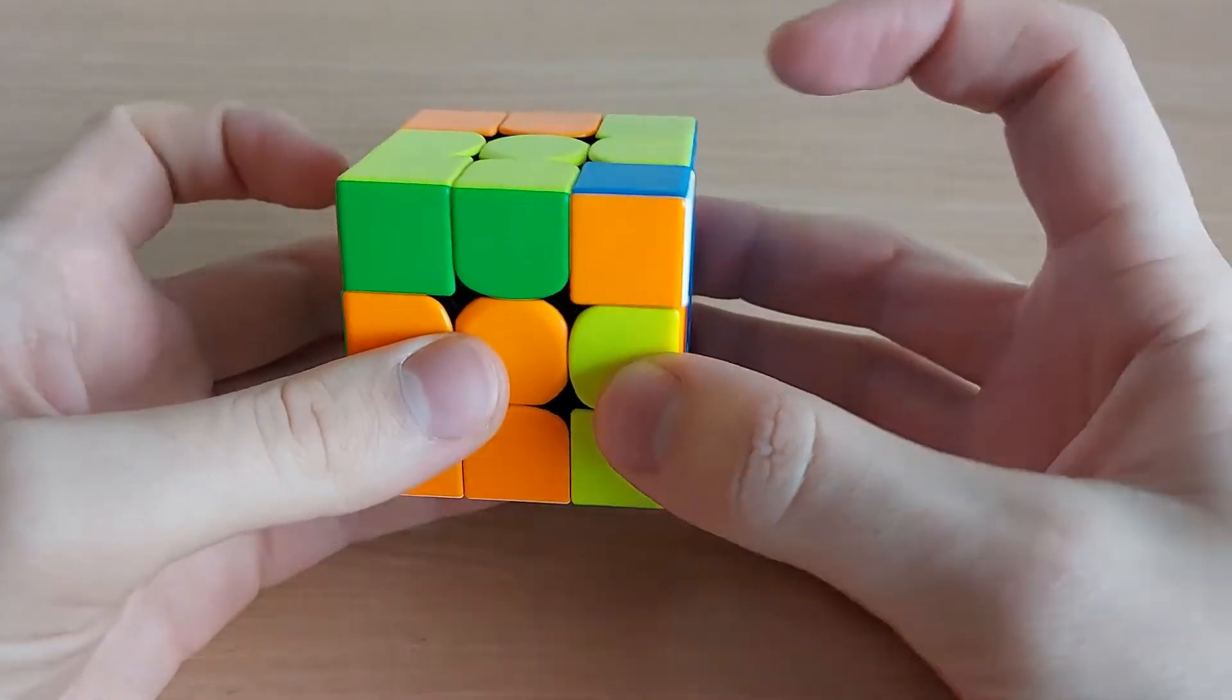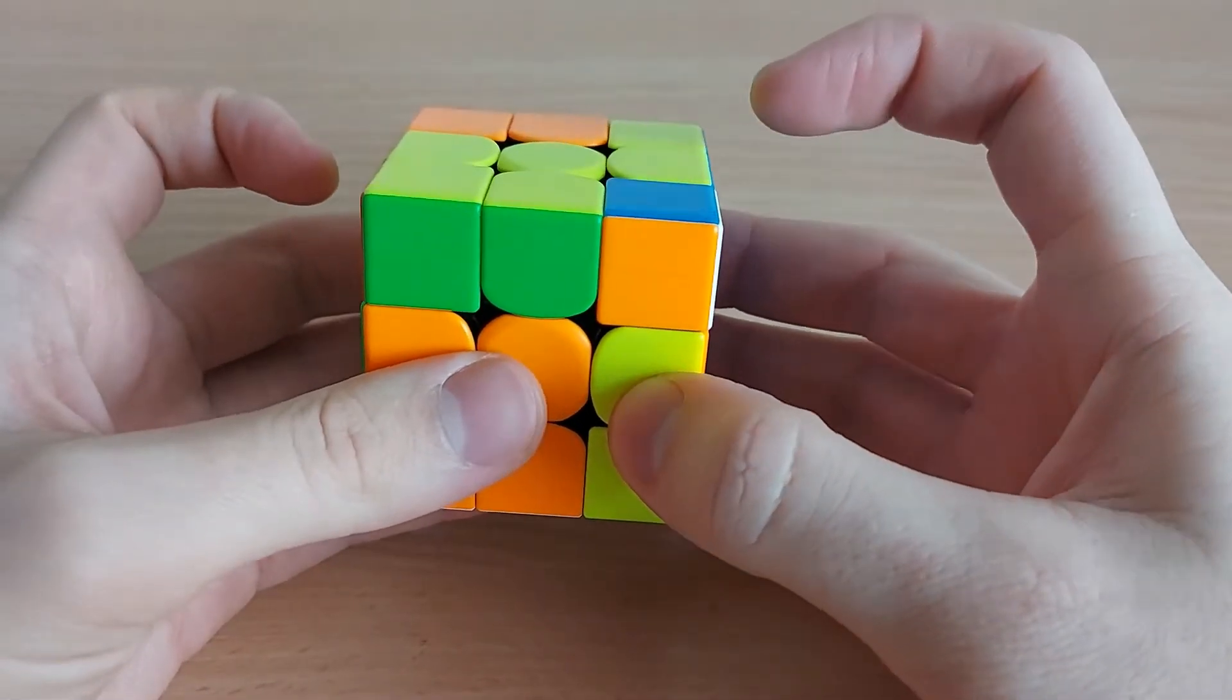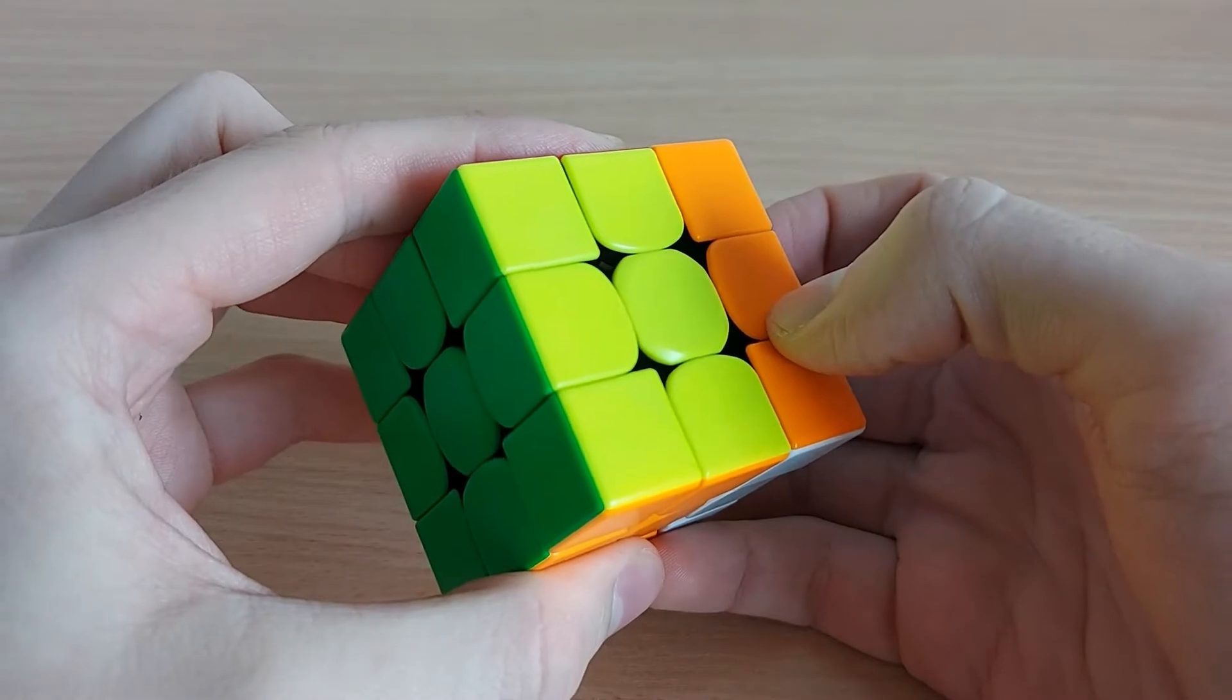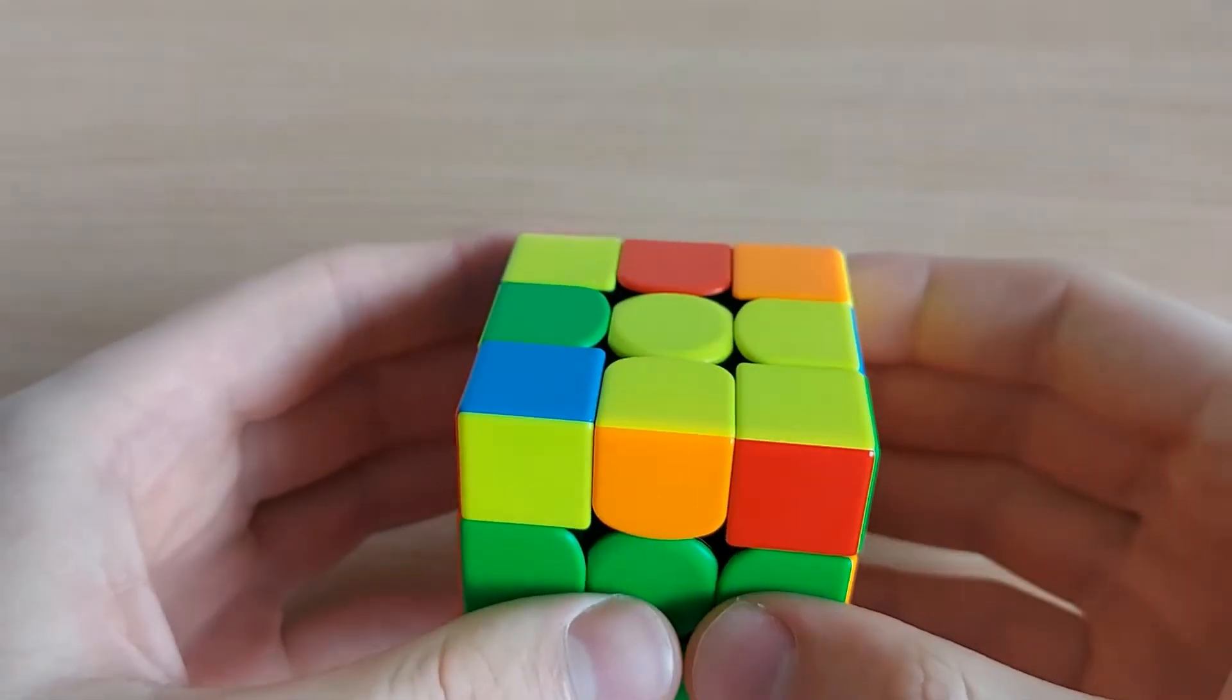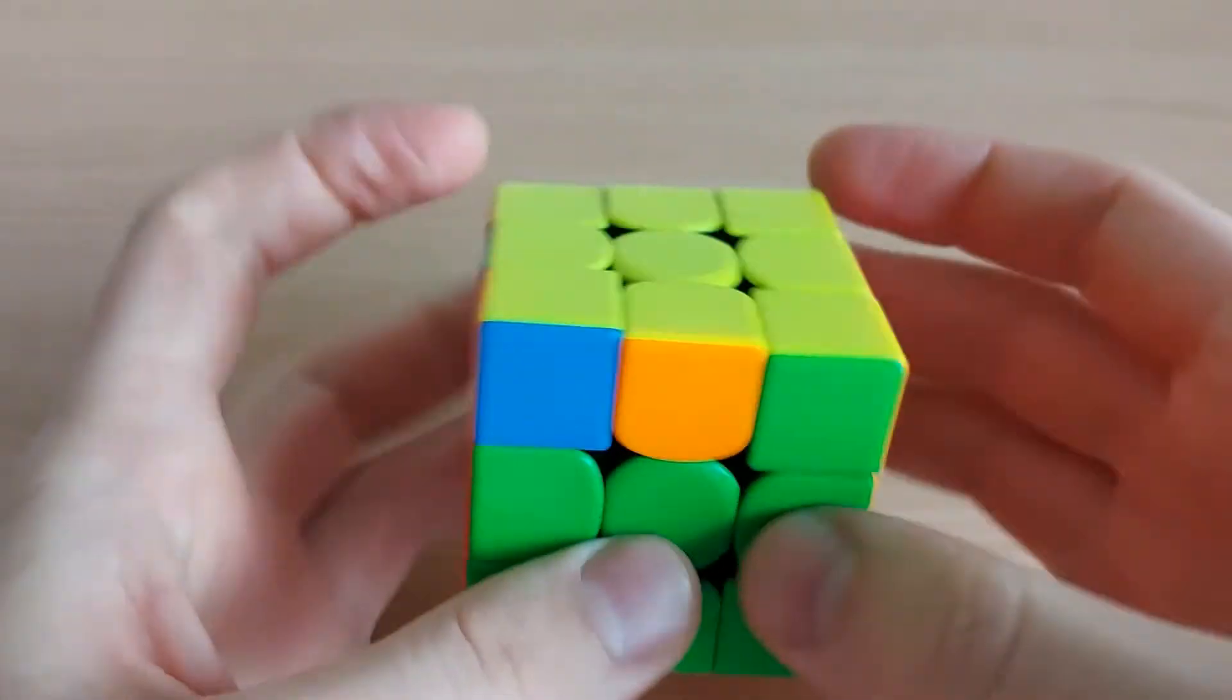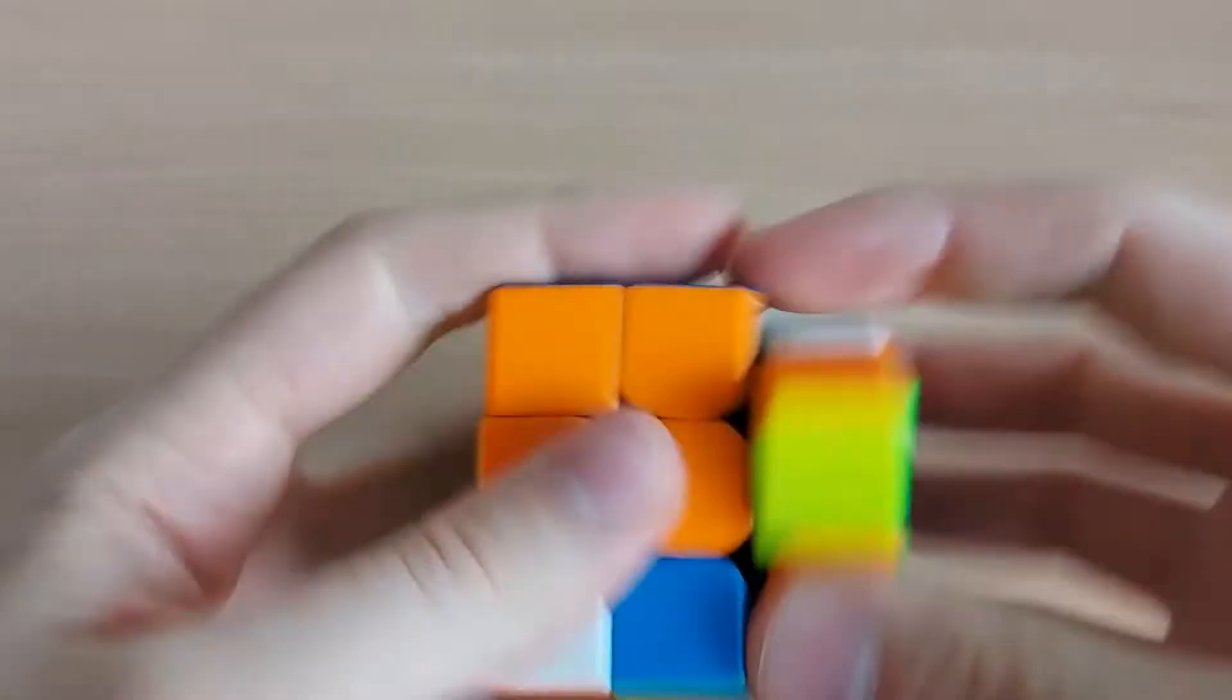U' and insert this pair by using R U2 R' with your left hand and R' U2 R'. Learn full OLL and full PLL as soon as you can.